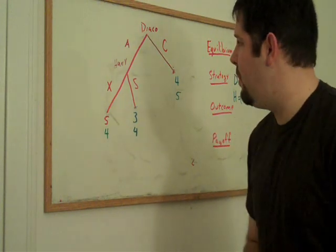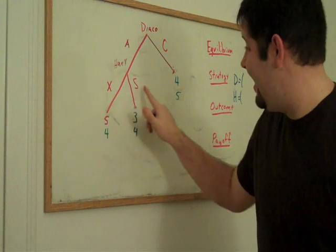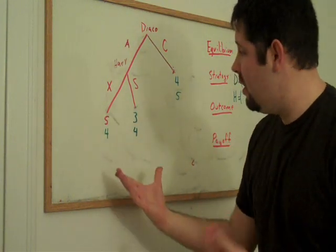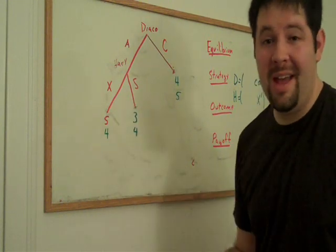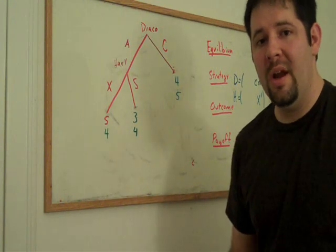But here's where we run into trouble. At this node, Harry is indifferent between X and S. Note that he gets a payoff of four now regardless of which option he picks. So he might as well pick X or he might as well pick S. But it doesn't matter what he does.